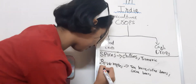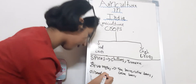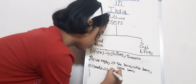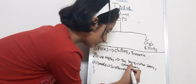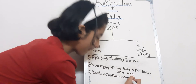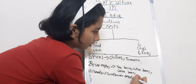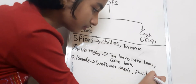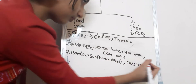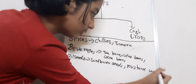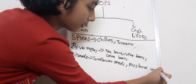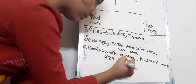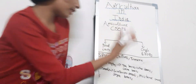And oil seeds — last is oil seeds. Examples of oil seeds are sunflower seeds and soya beans. So these are the examples for cash crops.